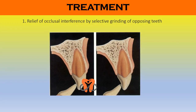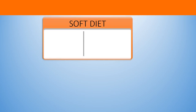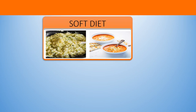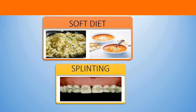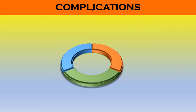The treatment of both types of injuries is the same. The first step is to relieve occlusal interferences by selective grinding of the opposing teeth, relieving any pressure that might be exerted onto the involved tooth. The patient is advised to take a soft diet for approximately two weeks. Splinting of the involved teeth is not necessary but may be desired for patient comfort, and if splinting is done it should not exceed two weeks.